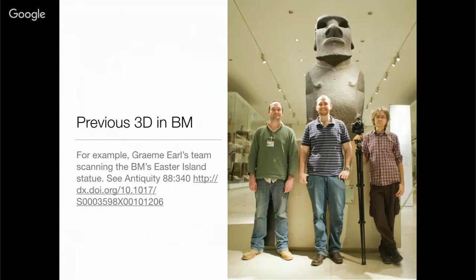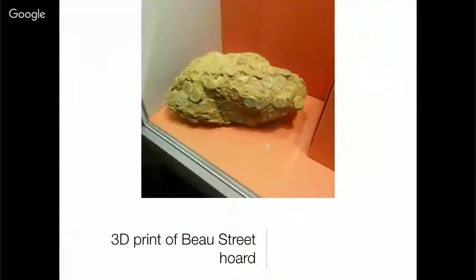The Moai model has been printed off around the world, been on the Jimmy Fallon show, it sits at my desk — I think I've got about 20 copies and I've made chocolates out of it. The paper's also published so you can read the methodology. They use a method called photogrammetry, which I'm going to talk about. We've also had 3D prints of coin hoards within the museum — this is one of the Bow Street hoards in Bath, showing how it was found.